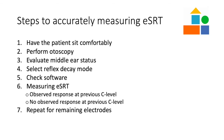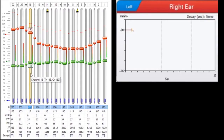If a response is not observed on the first presentation, increase your C-level and present again. Continue to increase your C-level until a response is observed. Here is an example of when no response is observed on the first presentation and the clinician increasing the C-level and presenting again. The C-level is increased until a response is observed.